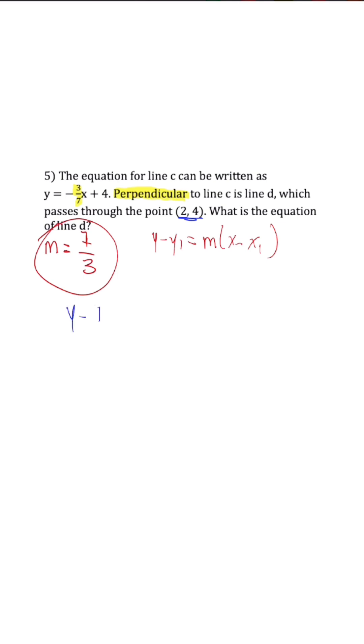So y minus four is equal to our new slope seven over three times x minus the x coordinate, which is two. So this is what we're going to have now.